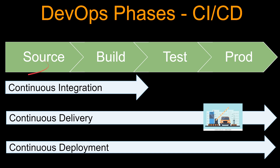Next is continuous delivery. Continuous delivery is a software development practice where code changes are automatically built, tested, and prepared for a release to production. It extends upon continuous integration by deploying all code changes to a testing environment and a production environment after the build stage.